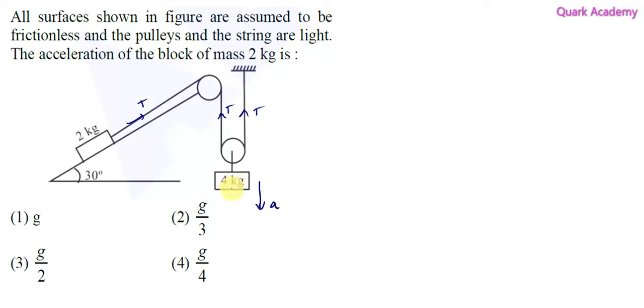Now let's draw the free body diagram of this 4 kg mass. Two tensions are acting, T here and T here, and the gravitational force will act, which we write as mass times acceleration. Here the mass is 4 and acceleration is g, so 4g. The acceleration is downward, so we can write an equation: 4g minus 2T, because 4g is downward and 2T is upward, so we have to subtract.